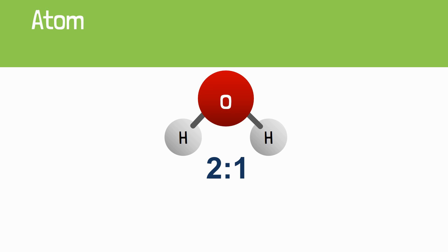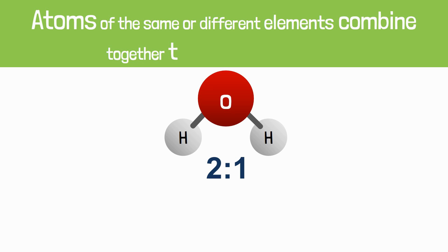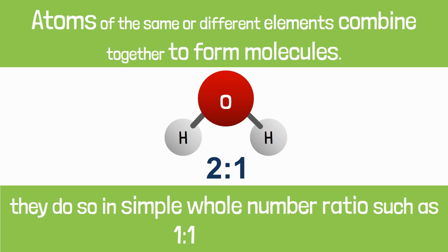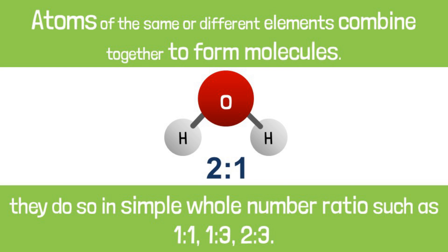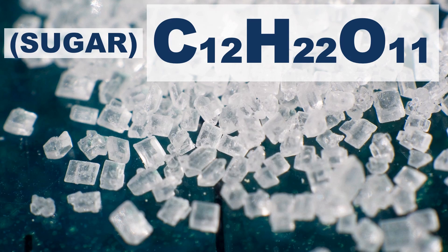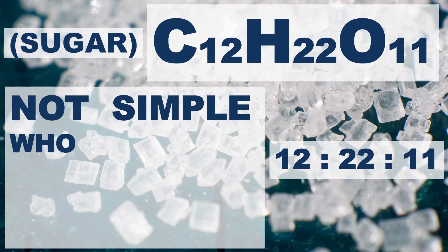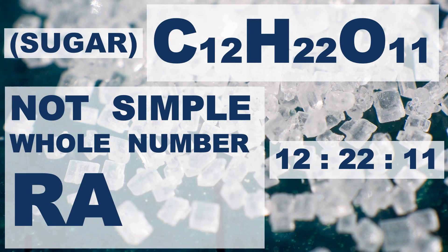Postulate number three: atoms of the same or different elements combine together to form molecules, and they do so in simple whole number ratios such as 1:1, 1:3, or 2:3. For example, water is a combination of two hydrogen atoms with one oxygen atom — a ratio of 2:1. But there are some compounds like C₁₂H₂₂O₁₁ that combine in a ratio of 12:22:11, so this ratio is not always a simple whole number ratio.